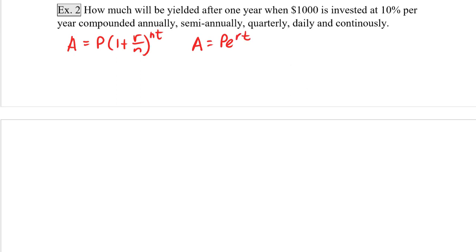Now when we're compounding annually, that means that n is equal to 1. So we're going to say then that A is equal to 1,000 times (1 plus, remember 10% needs to be written as a decimal, which is 0.1) divided by 1 to the 1 times 1. And when we put this in our calculator, we get $1,100.